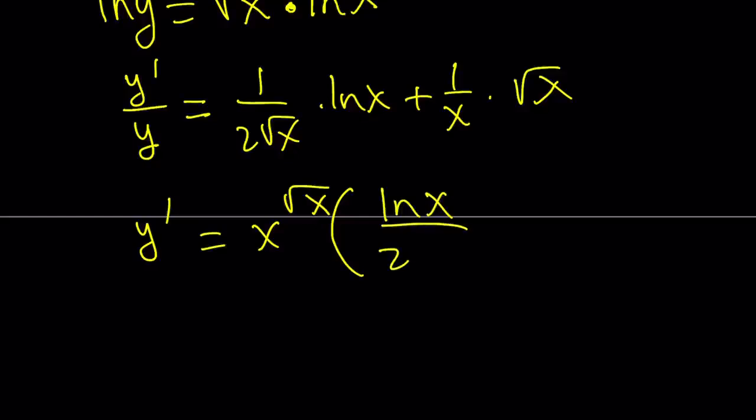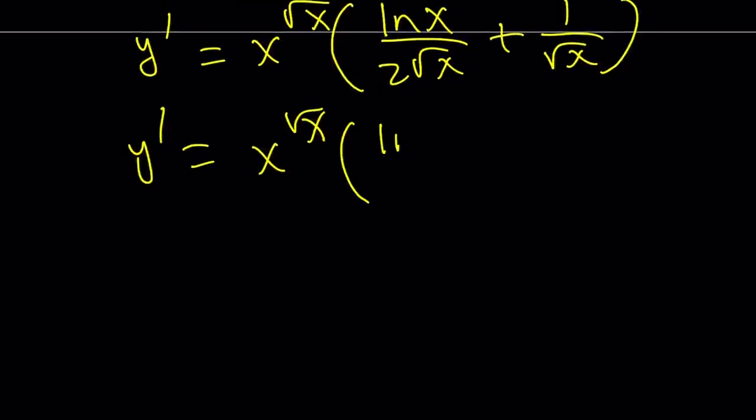you're going to get this plus that. If you simplify, make a common denominator, you know, if you do make a common denominator, you're going to get LN x plus 2 divided by 2 square root of x. So, on and so forth, it's going to be multiplied by this weird expression x to the power square root of x. And of course,